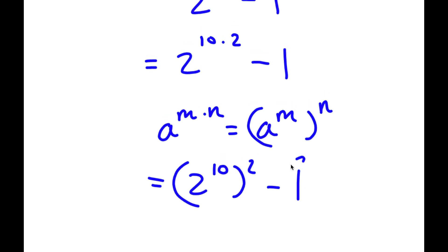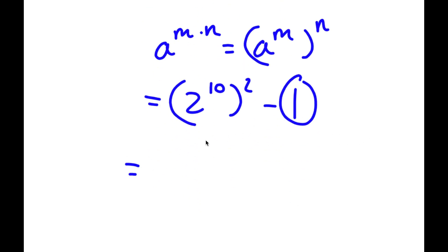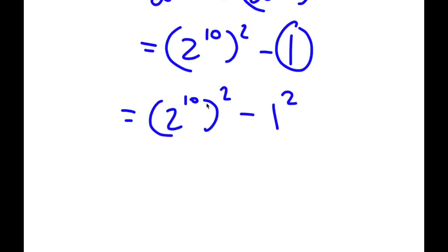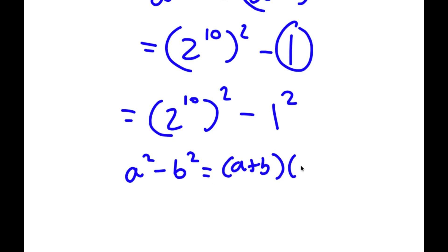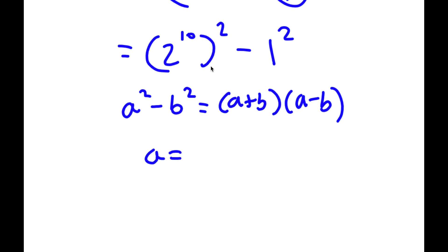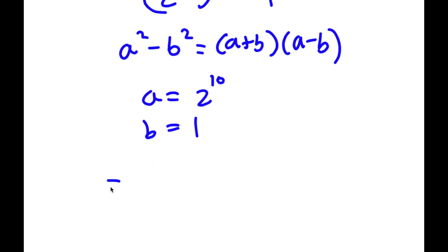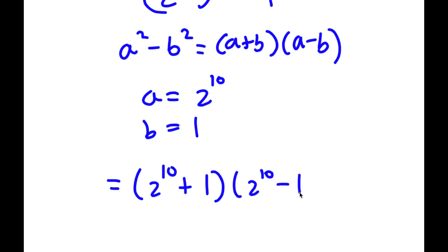Now, 1 here is the same thing as 1 to the power of 2, since 1 to the power of any number is going to equal 1. So now I have 2 to the power of 10 to the power of 2 minus 1 squared. I'm going to write 1 as 1 squared because it's the same thing. If you notice, both of these numbers are squared. And if I have something in the form a squared minus b squared, this is equal to a plus b times a minus b. So in this case a equals 2 to the power of 10 and b equals 1. Plugging into our formula, I get 2 to the power of 10 plus 1 times 2 to the power of 10 minus 1.